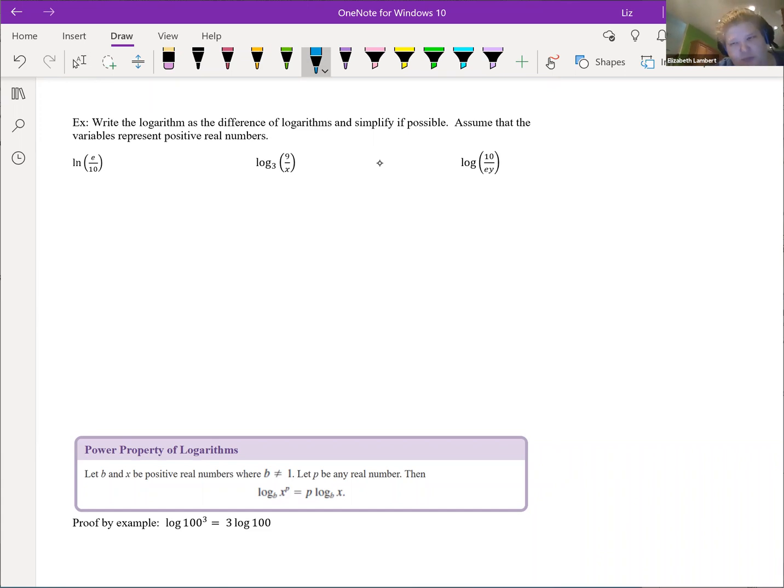All right, so here the natural log of e over 10. This will split into two logs instead, so the natural log of e and the natural log of 10. And anything that is on the bottom will get a minus, like a negative in front of it. You can think of it as plus negative one times the natural log of 10. We'll talk about that on the next video.